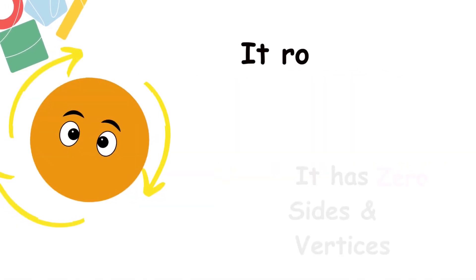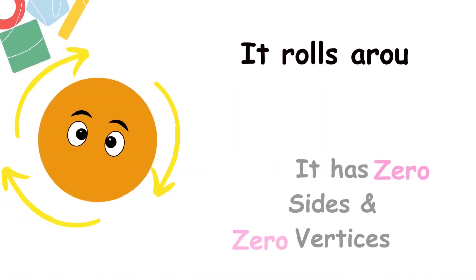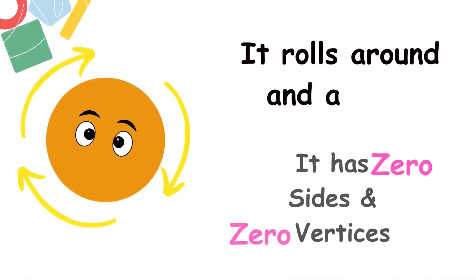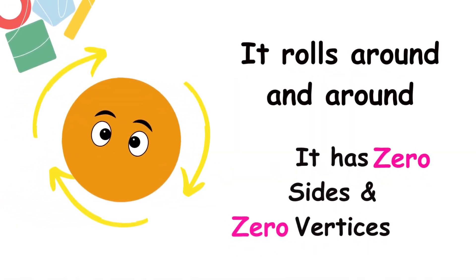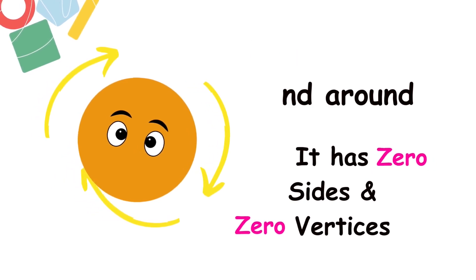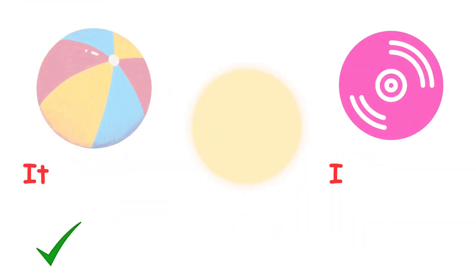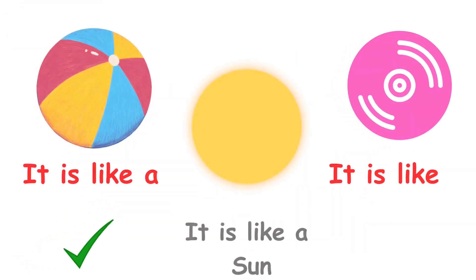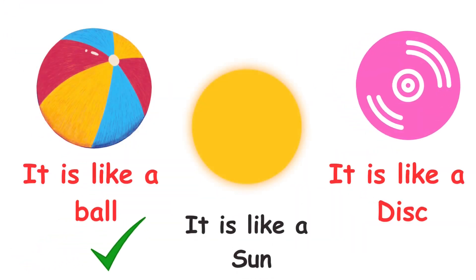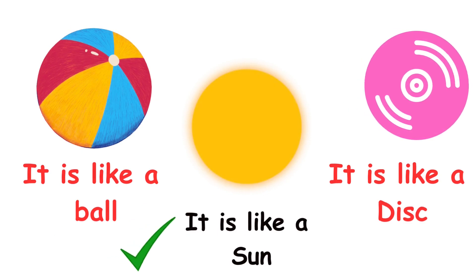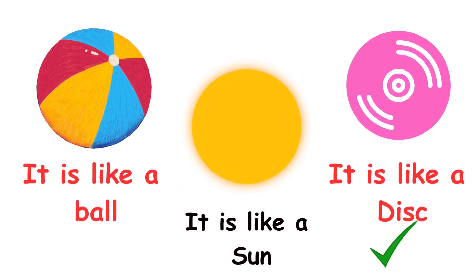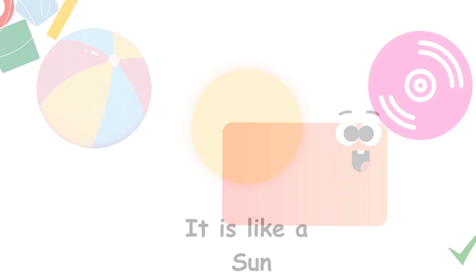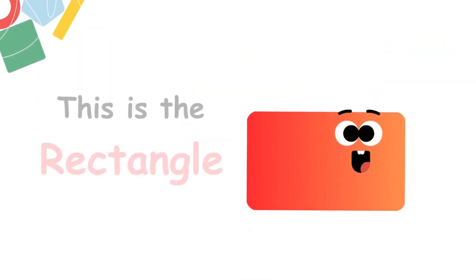This is the circle. It is circular in shape. It has zero sides and zero vertices. Its shape is similar to a ball, the Sun, and a disc.